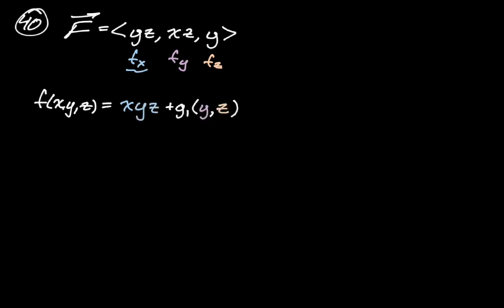We'll also have this arbitrary function. Looking at partial y: the derivative of what we think the potential function is (xyz + g(y,z)) with respect to y gives xz, which matches partial y. But looking at partial z, the derivative of xyz with respect to z is xy — and that is not in the vector field (partial z is just y, not xy). So that tells us there is no potential function.